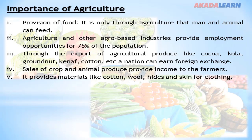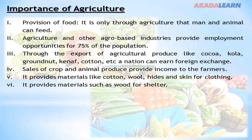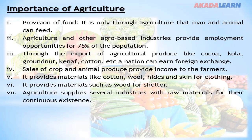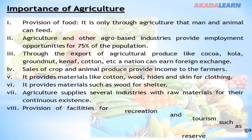Agriculture provides materials like cotton, wood, and hides and skin for clothing. It also provides materials such as wood for shelter. Furthermore, agriculture supplies several industries with raw materials for their continuous existence.